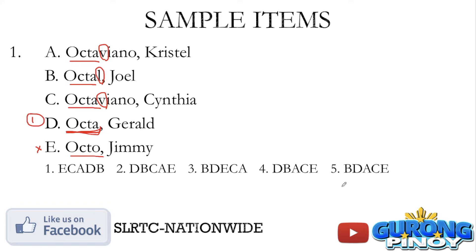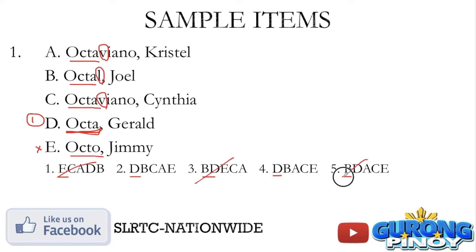Kung tinitingnan ang ating choices: number 1 starts with letter E, number 2 starts with letter D, number 3 starts with letter B, number 4 also starts with letter D, and number 5 starts with letter B. Since Okta Gerald comes first, choices 1, 3, and 5 should already be eliminated.